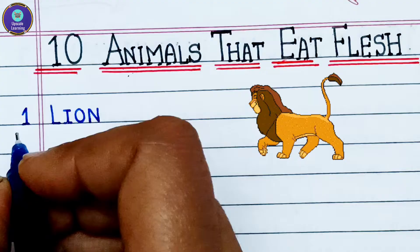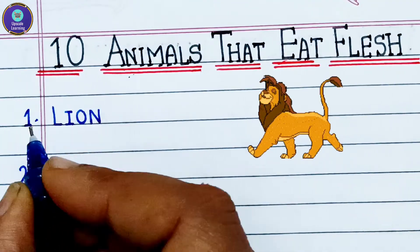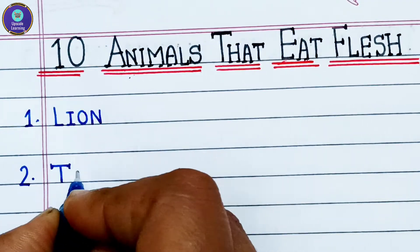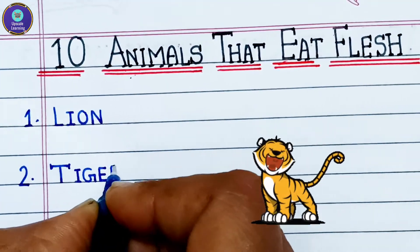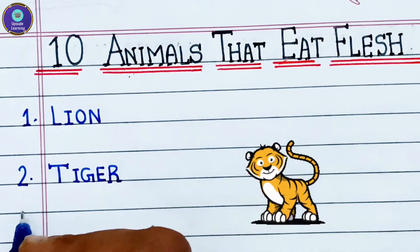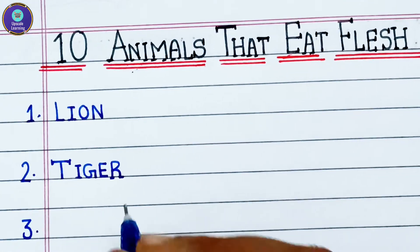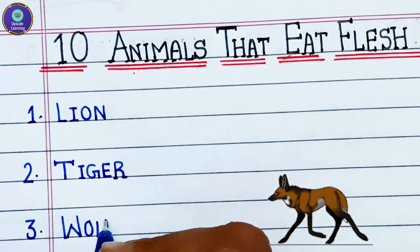Let's now write the first animal: lion, L-I-O-N, lion. Second one: tiger, T-I-G-E-R, tiger. Third animal is wolf, W-O-L-F, wolf.